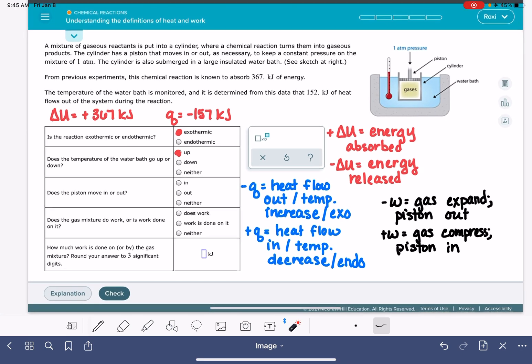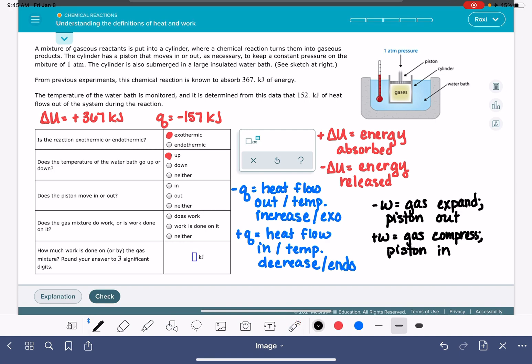I'm going to stick it up here: delta U equals Q plus W. Because we know our delta U and we know our Q, we can solve for W. So we'll fill in what we already know. We know that delta U is 367 kilojoules. We know that Q is negative 157 kilojoules. And we can easily solve for our work.